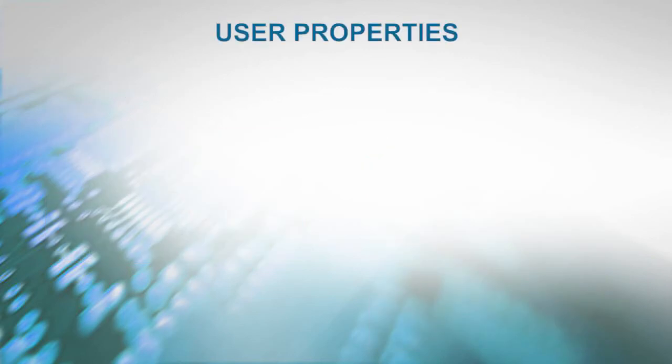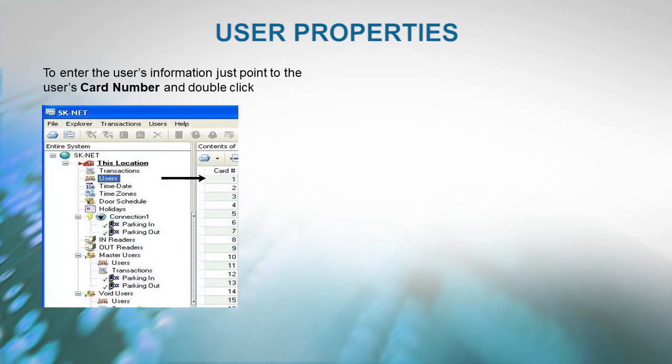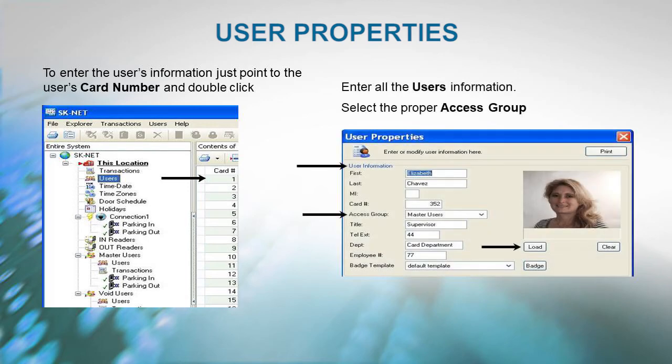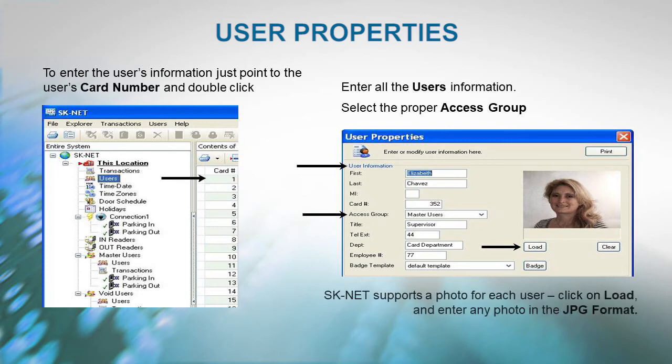User Properties: To enter the user's information, just point to the user's card number and double-click. Enter all the user's information. Select the proper Access group. Additionally, SKNet supports a photo for each user. Just click on Load and enter any photo in the JPEG format.